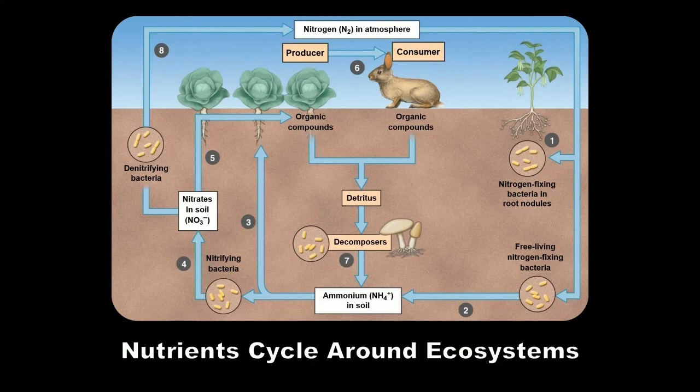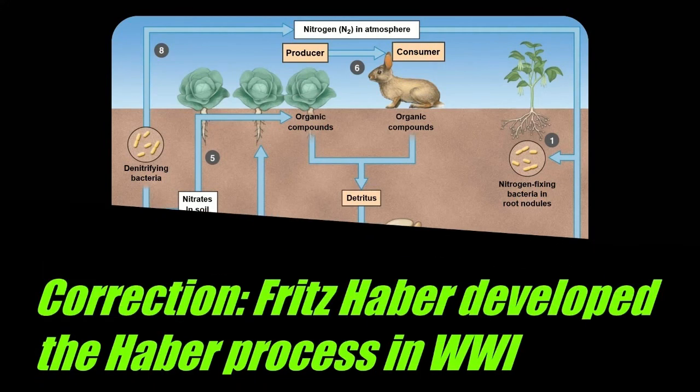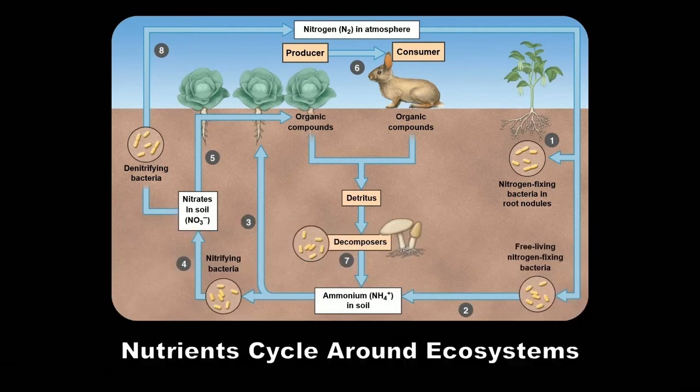Humans also learned how to break the N₂ triple bond around World War II. Fritz Haber was trying to develop better explosives for the German war effort and discovered the Haber process, which allowed us to take atmospheric nitrogen and create artificial fertilizers, dramatically increasing agricultural output. He probably ended up saving more lives by feeding more people through increased agriculture than he contributed to ending in the war.